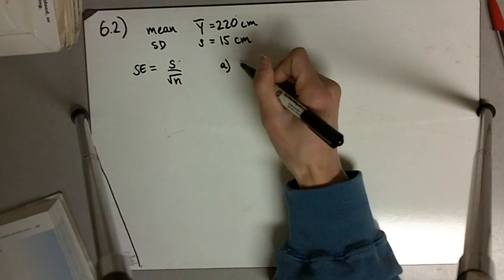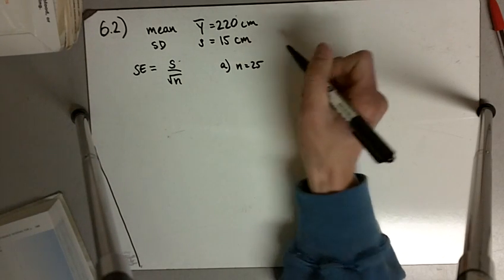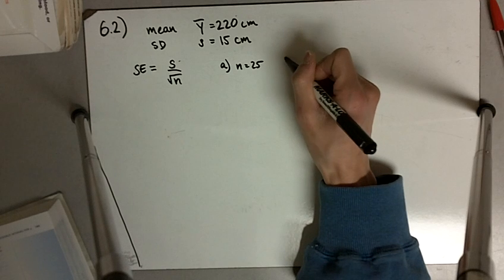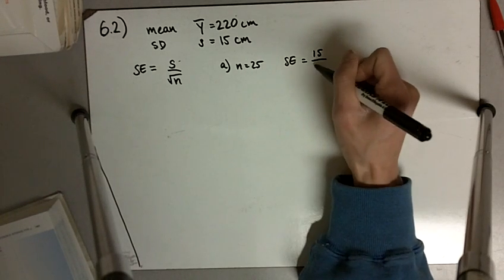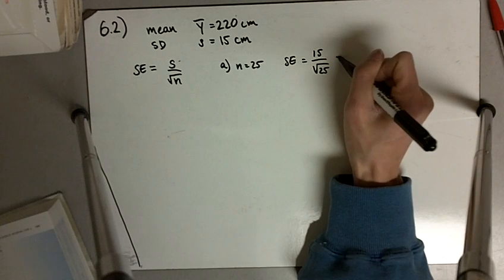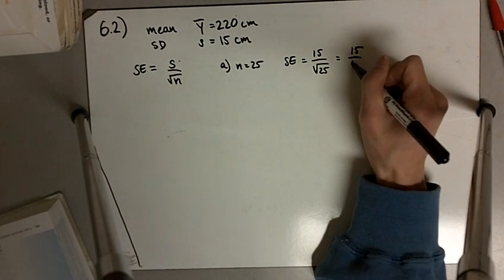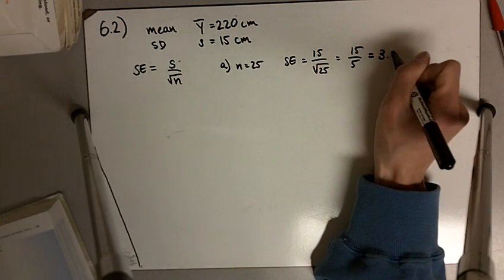So for part a, if n equals 25, then the standard error is going to be 15 divided by the square root of 25, or 15 divided by 5, or 3 centimeters.